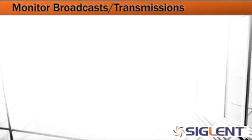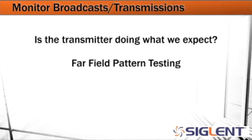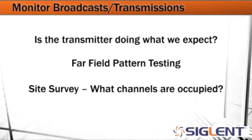So now let's dig into monitoring broadcasts and transmissions. Some important things to look at: is the transmitter doing what we expect? Are we reaching the amplitudes that we expect? Are we in the transmission band, or are we going outside of our expected frequency range and stepping into someone else's frequency range? Far-field pattern testing — are we transmitting properly in a particular direction? We can also do site surveys internal to an office building or a hospital to see what channels are occupied and get a better idea of where we may have interference or issues with occupied channels.